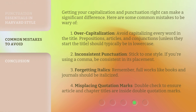Getting your capitalization and punctuation right can make a significant difference. Here are some common mistakes to be wary of. First, overcapitalization: avoid capitalizing every word in the title — prepositions, articles, and conjunctions, unless they start the title, should typically be in lowercase. Second, inconsistent punctuation: stick to one style; if you're using a comma, be consistent in its placement. Third, forgetting italics: full works like books and journals should be italicized. Fourth, misplacing quotation marks: double-check to ensure article and chapter titles are inside double quotation marks.